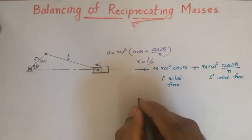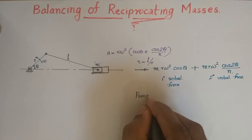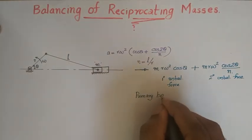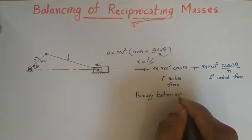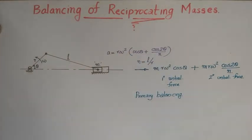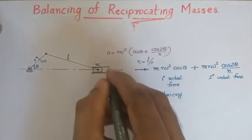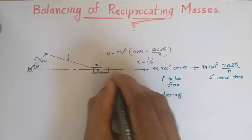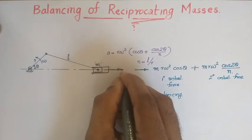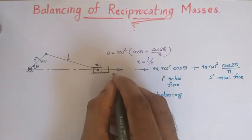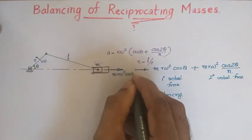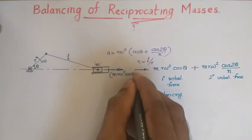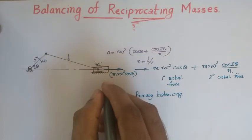Initially, we will consider only the primary unbalanced force and perform primary balancing. At the end of the chapter, we will conduct complete balancing, considering both primary and secondary unbalancing. For primary balancing, only the effect of the primary unbalanced force, m·r·Omega²·cos θ acting along the line of stroke, is considered.